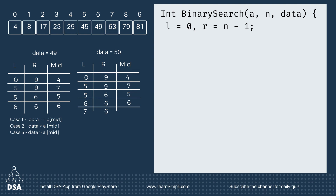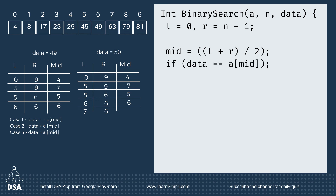First we take L equal to 0 — that is our left variable. R is equal to n minus 1 — this is the right variable. Then we will find the middle value: mid is equal to L plus R divided by 2. Next check the cases: if data equals a[mid], return mid.